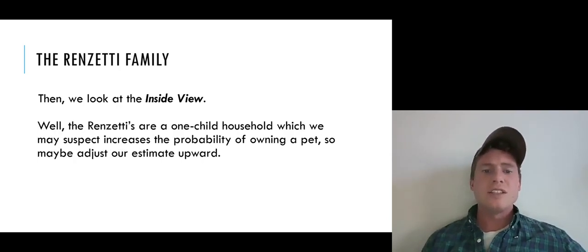In this case with the Renzettis, we might look at some more specific information like, well, they're a one-child household, which we might suspect increases the probability of owning a pet. So maybe we should adjust our estimate upward somewhat from the baseline of 62%. We start with the outside view, looking at how probable events like this are in general, and then we look at the details of the case at hand and see how should we adjust our probabilities.